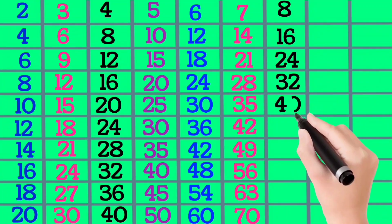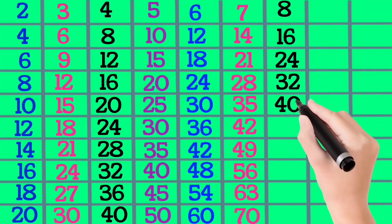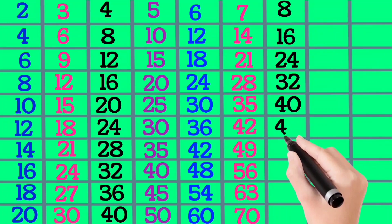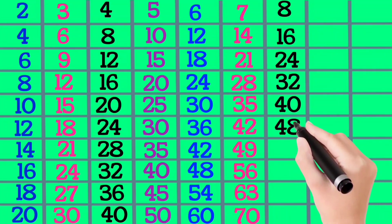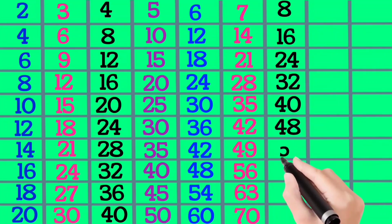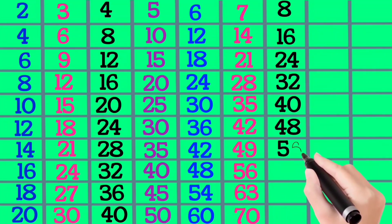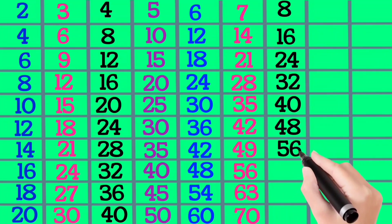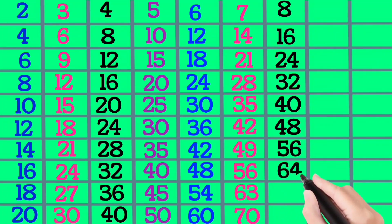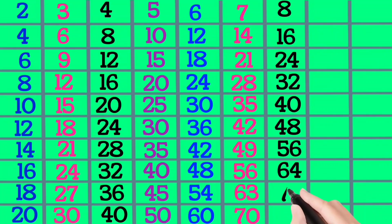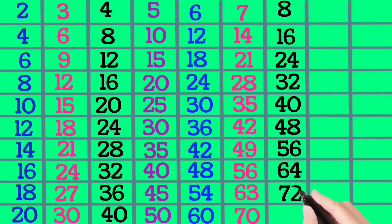8×6 is 48, 8×7 is 56, 8×8 is 64, 8×9 is 72, 8×10 is 80.